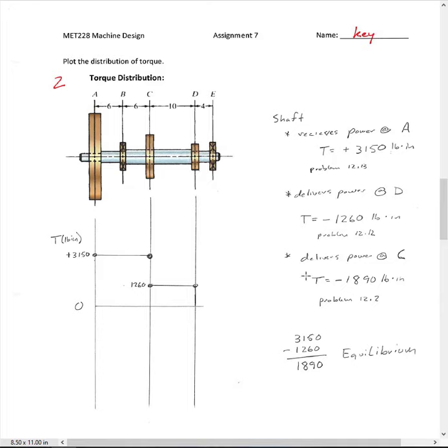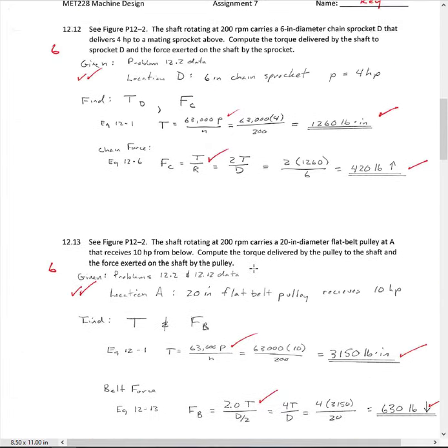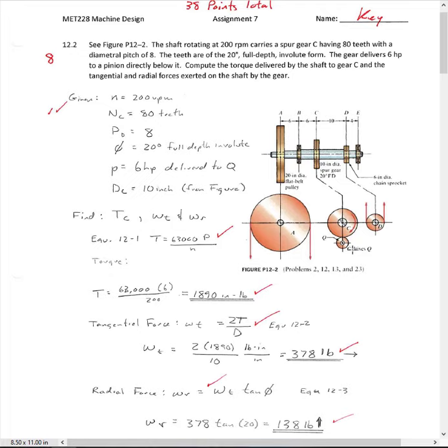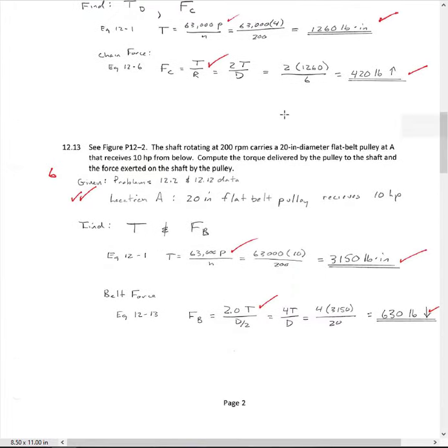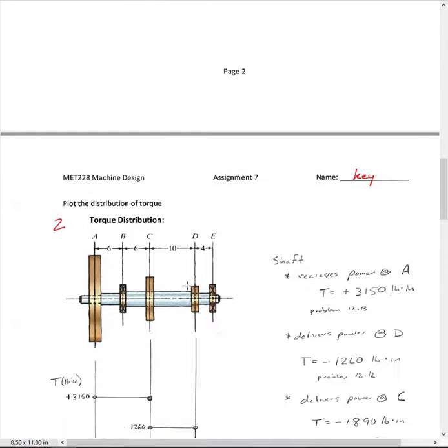So at the chain sprocket, it's taking away 4 horsepower, and then at the gear, it's taking away 6 horsepower. So obviously, if we have equilibrium at the flat belt where it's getting its power, it's getting 10 horsepower. So 10 plus 10 minus 6 minus 4 comes back to 0.